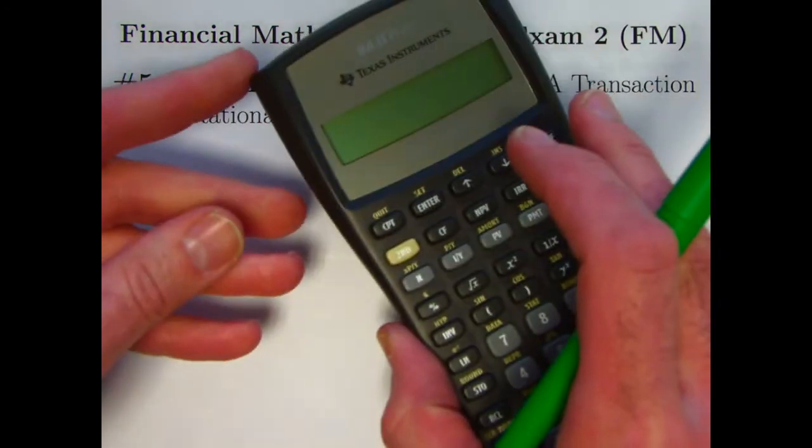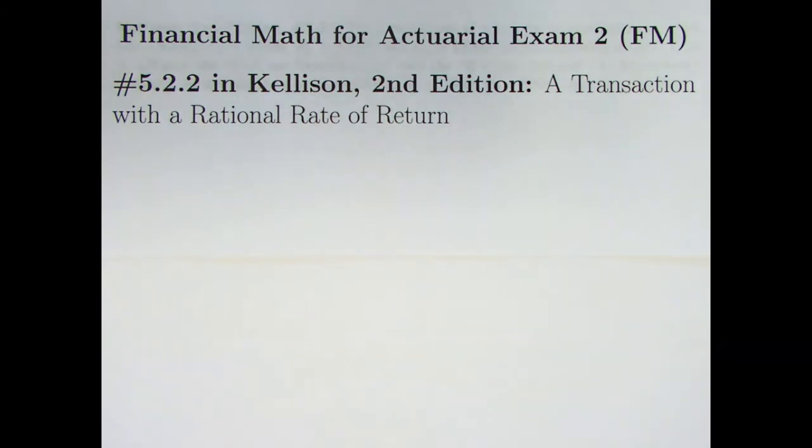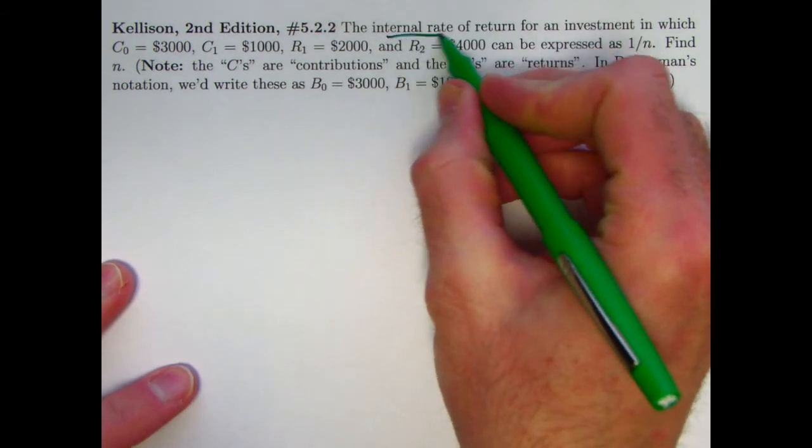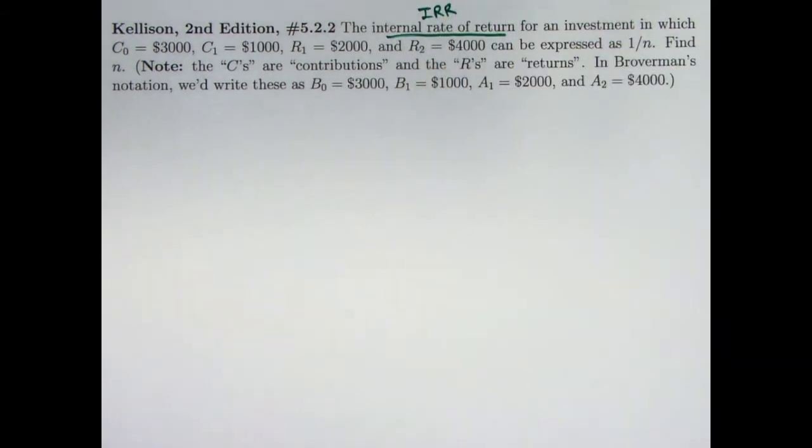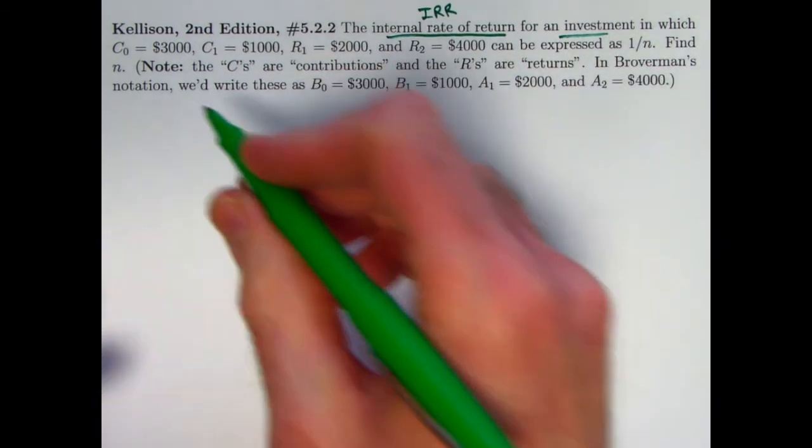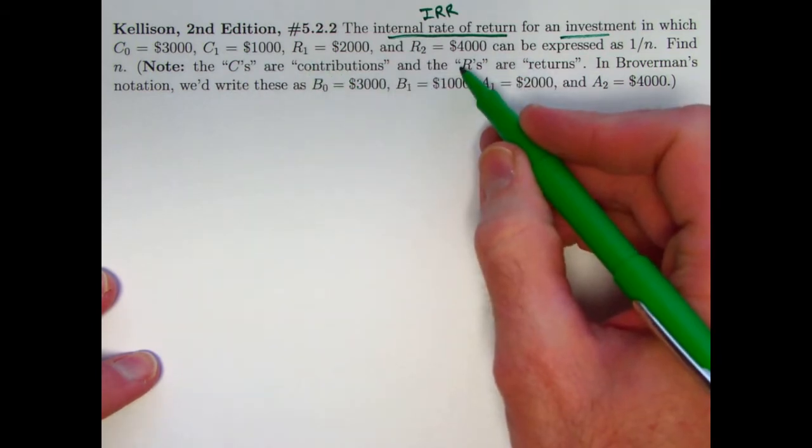Internal rates of return, oftentimes you've got to use a calculator to figure them out, financial functions, but in this case we'll be able to use the quadratic formula. So here's the way the problem is phrased in Kellison's book. We've got the internal rate of return, IRR, also called the yield rate, for an investment...